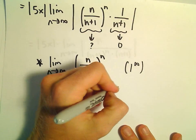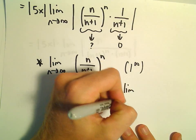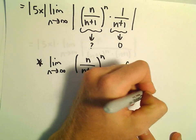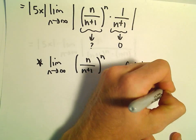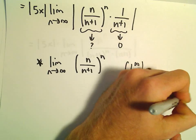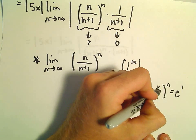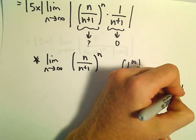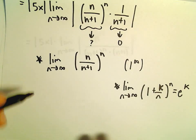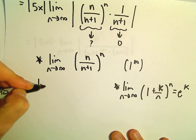A very useful limit: if we take the limit as n goes to infinity of 1 plus 1 over n raised to the n, that equals e. Kind of more generically, if we put just like a constant k, this limit equals e to the k. So I think we may be able to use that in this case.